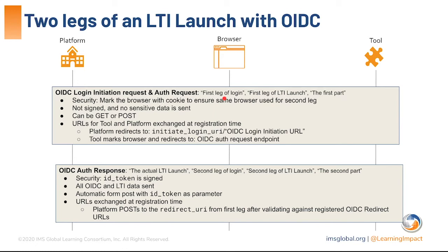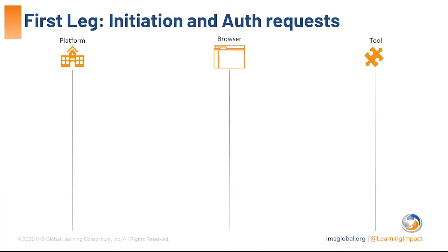The first leg is often called the login initiation and authentication request — officially the OIDC login initiation request. The second leg is often called the actual LTI launch, the second leg of the LTI launch, or the authorization response. There are many ways people reference these, and talking past each other can be confusing, so it's useful to know the vocabulary for both legs when implementing and communicating with others.